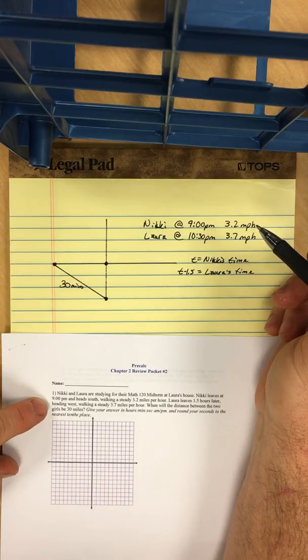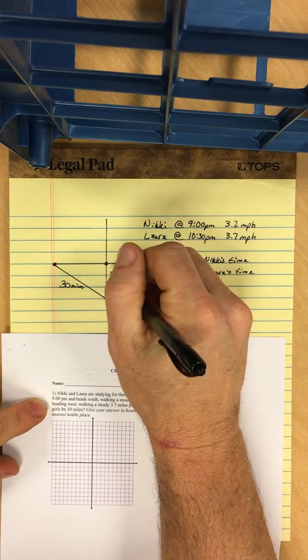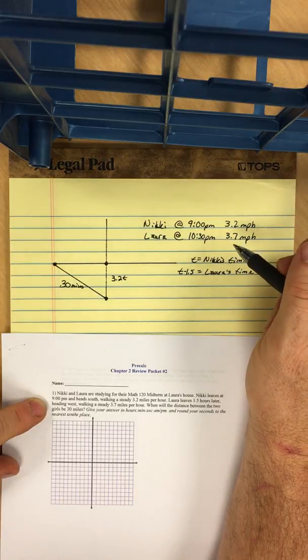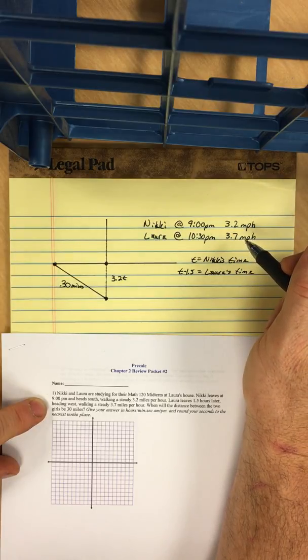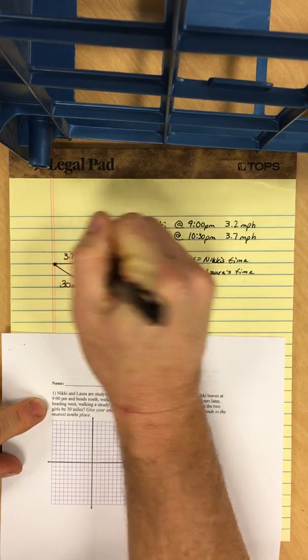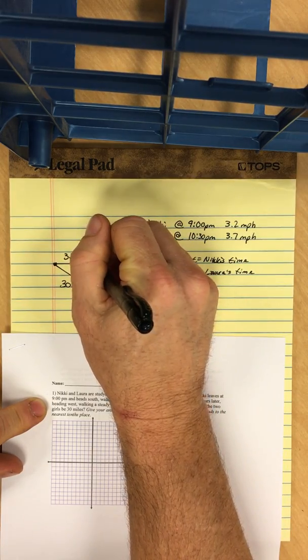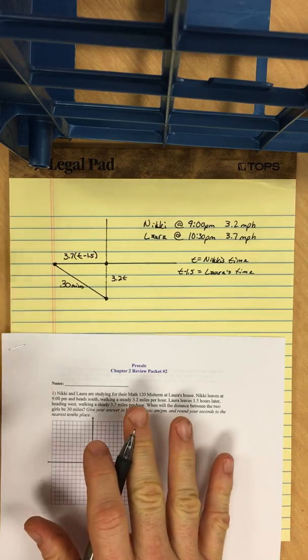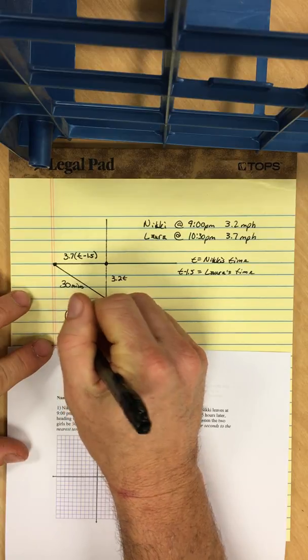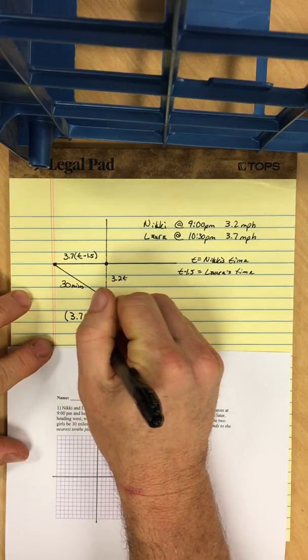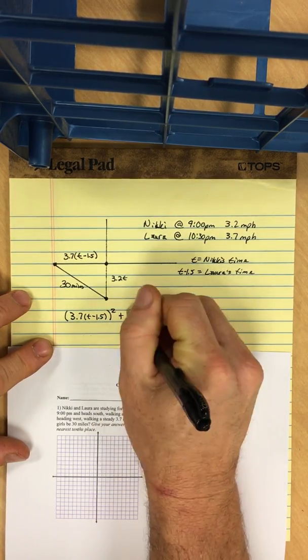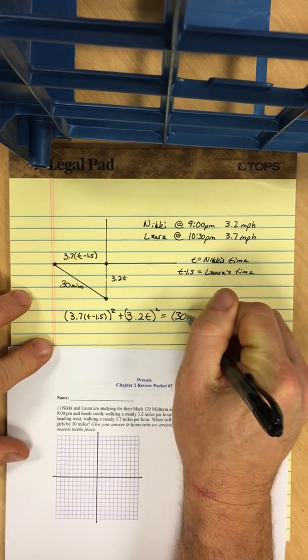So here we go. We know the distance that Nikki's gonna travel is 3.2 times her time, so this distance has to be 3.2t. And Laura is traveling at 3.7. So this distance is 3.2t, and this is 3.7 rate times her time, which is t minus 1.5. Looks easy enough. So we should be able to do a squared plus b squared equals c squared. So we have 3.7 times (t minus 1.5), that quantity squared, plus 3.2t, that quantity squared, has to equal 30 squared.